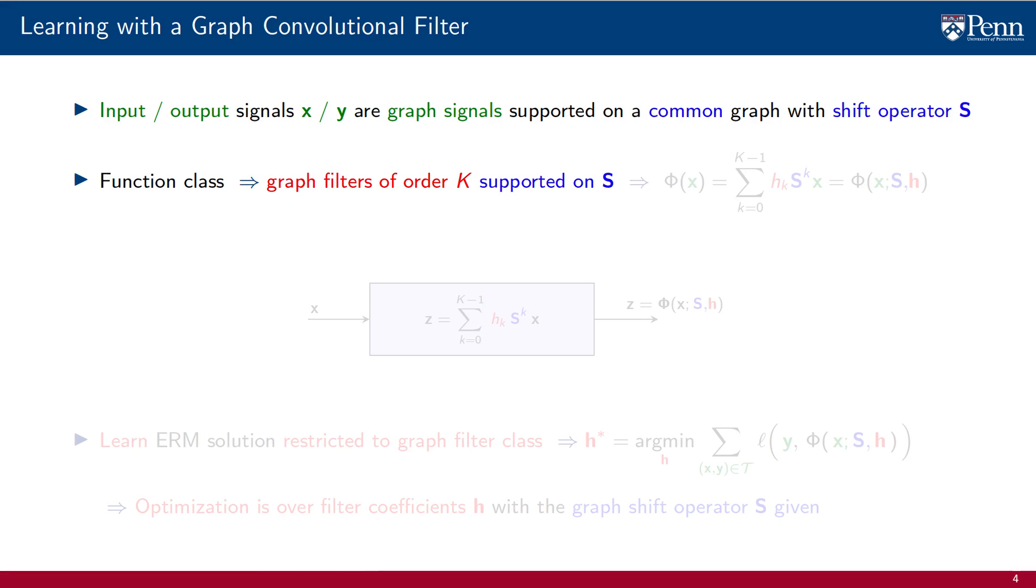Given that inputs and outputs are graph signals supported on S, we choose as function class the set of filters of length capital K that are supported on the graph S. The function class phi produces outputs phi of x by multiplying x with a polynomial on the shift operator modulated by coefficients h_k. The polynomial is of order k minus 1 and the total number of coefficients is capital K. This is a function class that is parameterized by both the shift operator S and the filter coefficients h. The shift operator represents given prior information and the filter coefficients h are the parameter we want to learn.